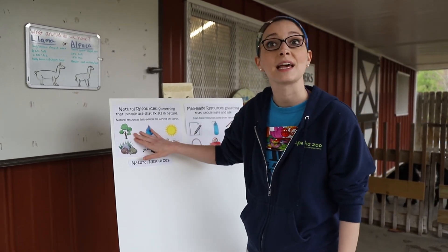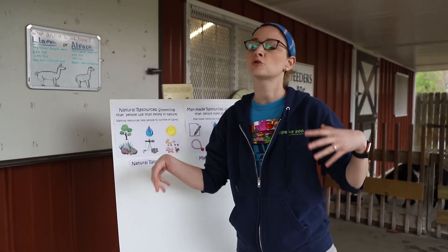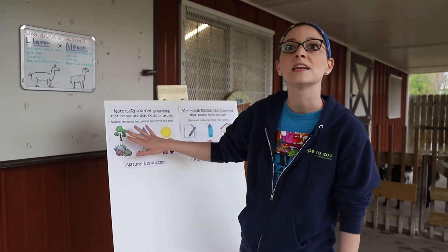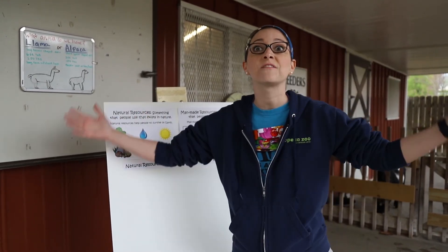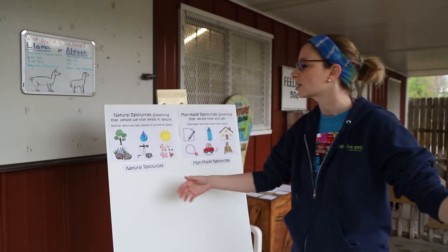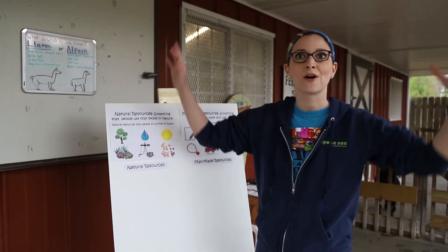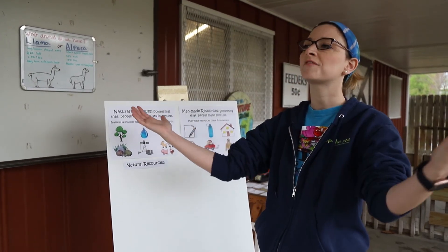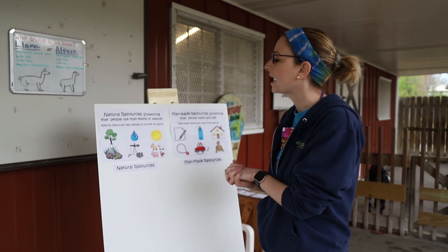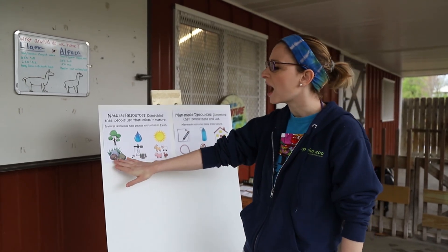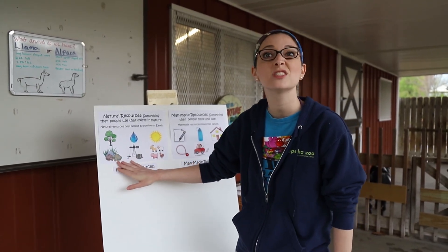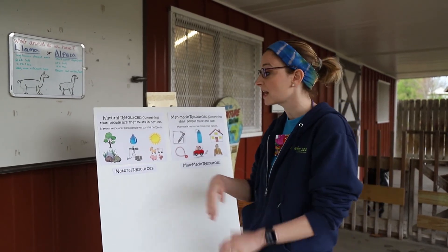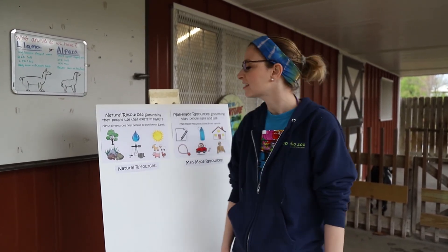Things like plants — all plants from trees to flowers — are going to be a natural resource. They are found in nature. Things like water from the rain or sunlight, that is naturally found out in the wild. Things like rocks and soil and gems, anything on the ground that we find outside, we can use that for differing things.